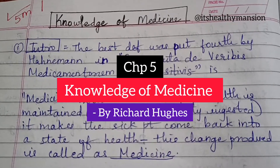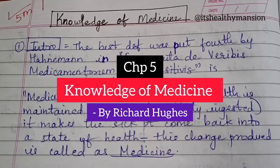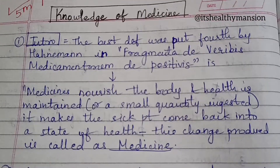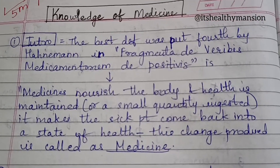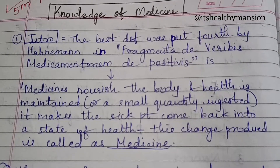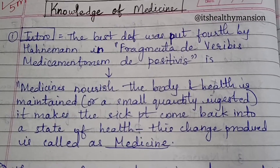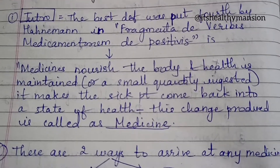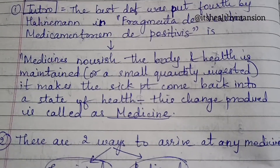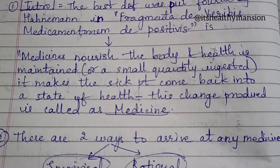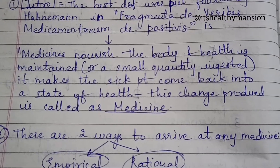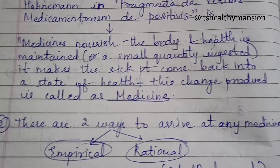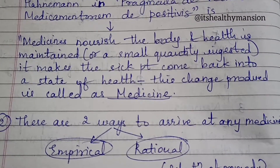Hello everyone, today we are going to talk about Chapter 5 of Richard Hughes, i.e. Knowledge of Medicine Introduction. The best definition was put forth by Hahnemann in Fragmenta de Verbis: medicines nourish the body and health is maintained when a small quantity is ingested. It makes the sick patient come back into a state of health. This change produced is called a medicine.